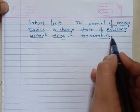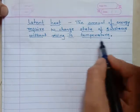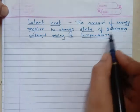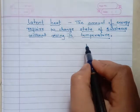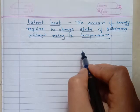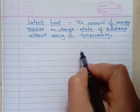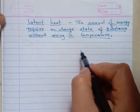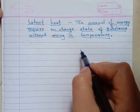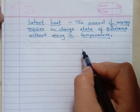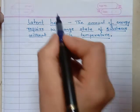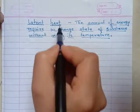You will ask: how can one change the state of a substance without raising its temperature? When we heat a particular substance, its temperature rises basically. But there are some activities by which you will come to know that when any substance changes its state, for some time the temperature remains constant, and that temperature remains constant because of the latent heat.